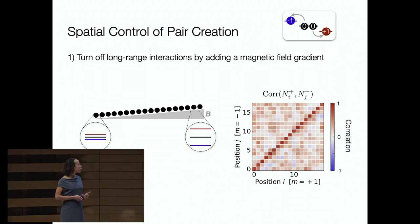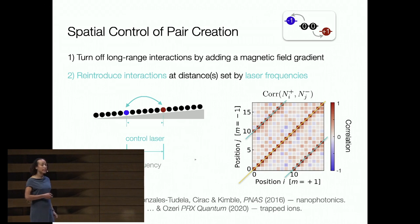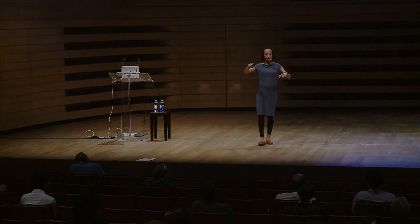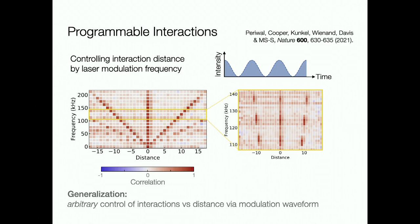We can now controllably reintroduce interactions at a distance of our choice by turning on a second frequency in our control field. Processes where an atom absorbs a photon of one frequency and emits a photon of another bridge the energy cost of creating pairs at some distance. By choosing the modulation frequency of our laser field, we choose the distance at which interactions are active. Correlations as a function of distance and modulation frequency track each other nicely. Since this is just modulating the intensity of the light—easy to do with any waveform—we can have flexible control of the structure of interactions.